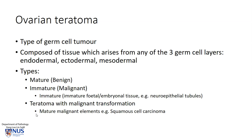There are several types of teratomas. We have the mature ones which are only composed of mature tissues — these are benign teratomas. A subset of these are cystic, and therefore they are called mature cystic teratomas, as we saw in the specimen. And there are immature ones which are considered malignant.